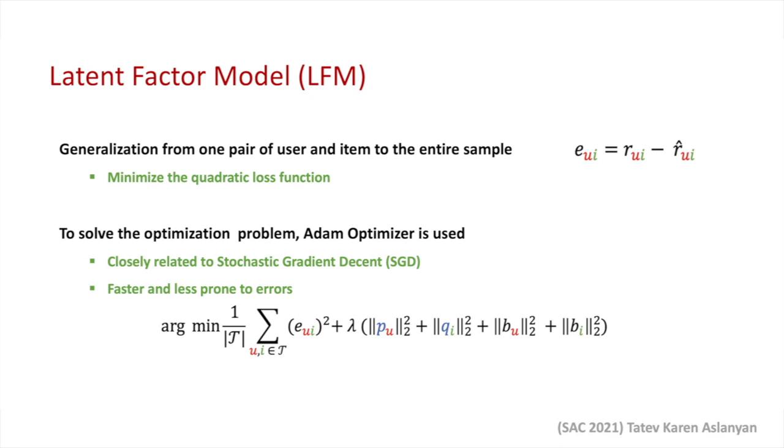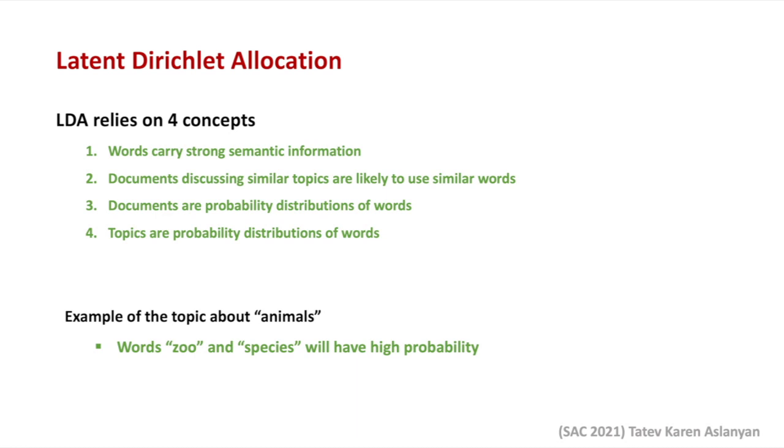To solve this optimization problem, we use AdamOptimizer, which is a more sophisticated version of the Stochastic Gradient Descent algorithm. Let us now discuss the second part of our technical setting, the Latent Dirichlet Allocation model, which is used to uncover the hidden dimensions in the textual reviews.